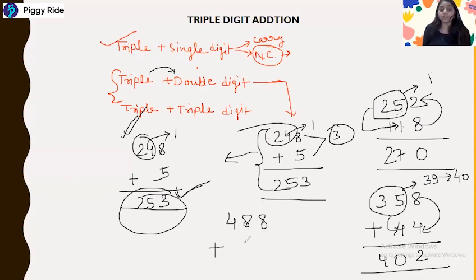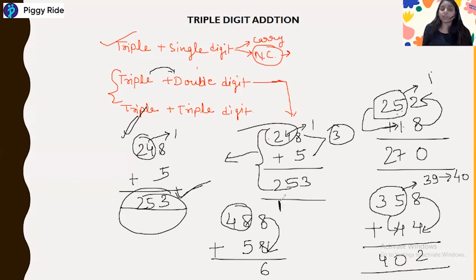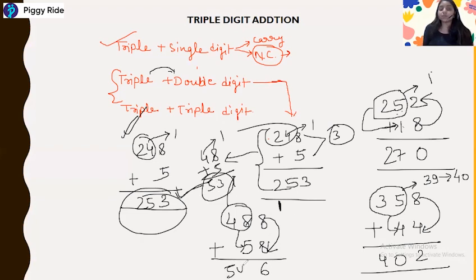Next example: 488 plus 58. Take 48 as the leftmost two digits. The end digit will be 6. Then add 48 plus 5: recalling previous classes, the end number is 3 and 4 increases by 1, giving 53. Adding the carry 1 gives 54, so the answer is 546.